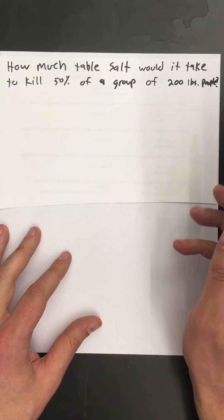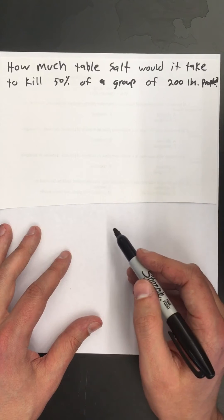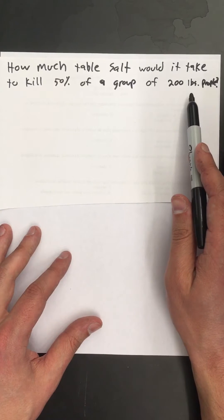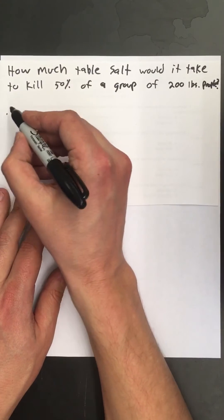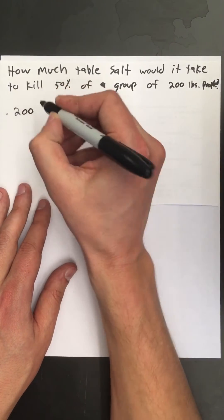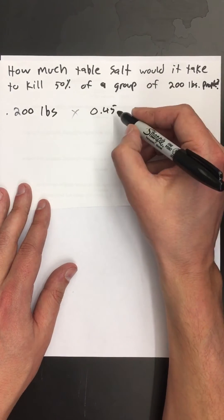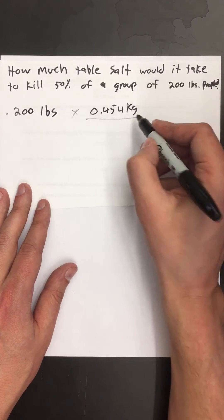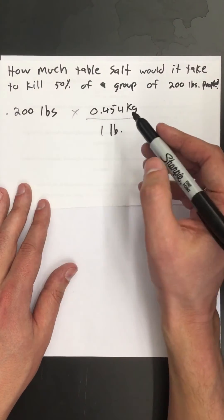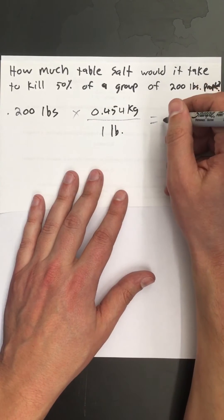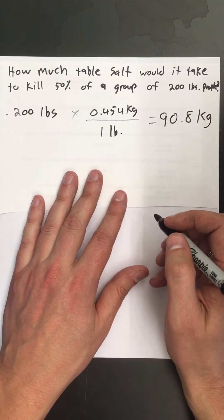Our first problem is units. Here in America we love our pounds but the world of science doesn't usually work in pounds. Since LD50s are listed in milligrams per kilogram, our first task is to convert my weight into kilograms. So I'm going to take my weight, which is about 200 pounds, and multiply it by 0.454 kilograms per one pound. There's about 0.454 kilograms in a pound, so if I take my mass times that I should get my mass in kilograms. So I have a mass of 90.8 kilograms.